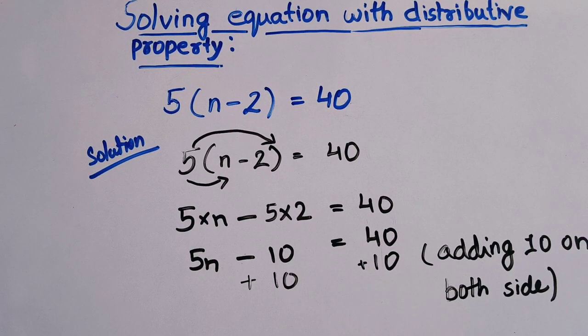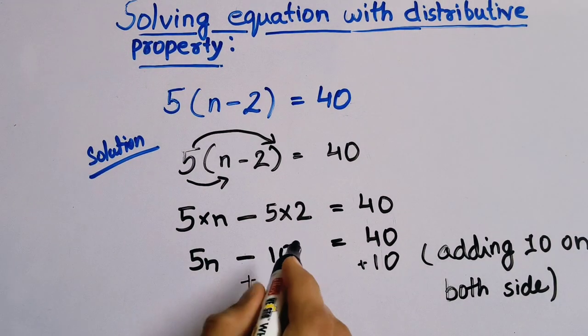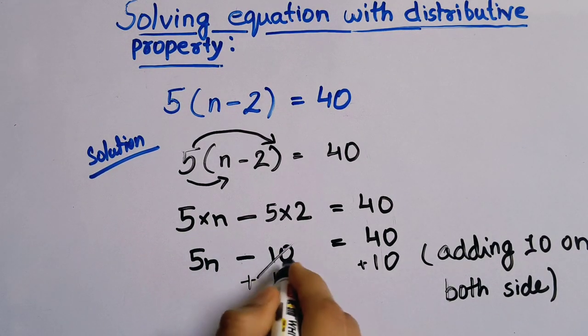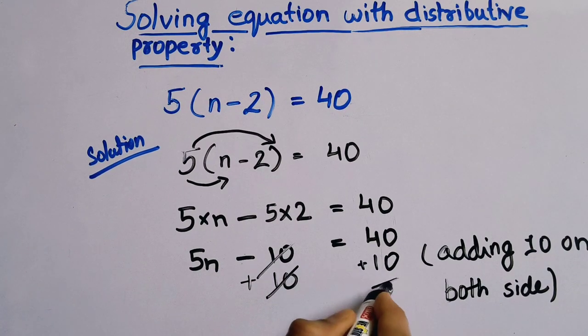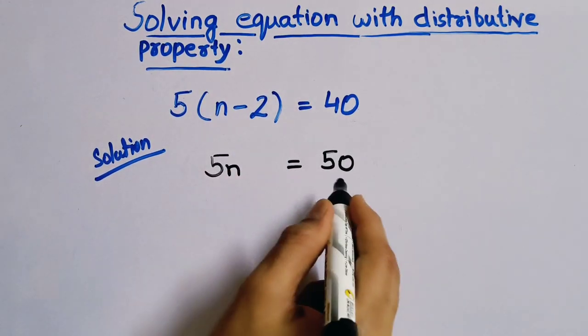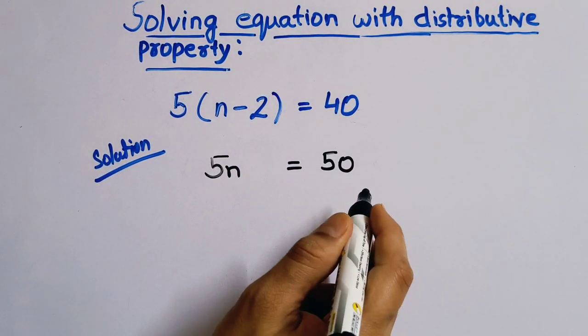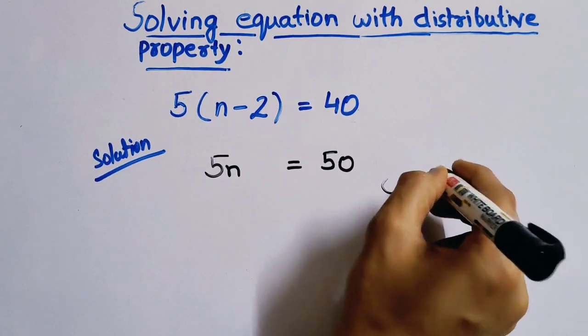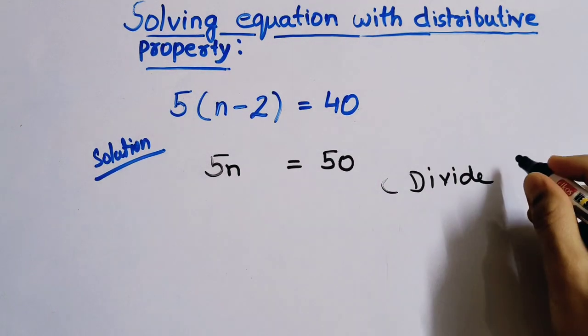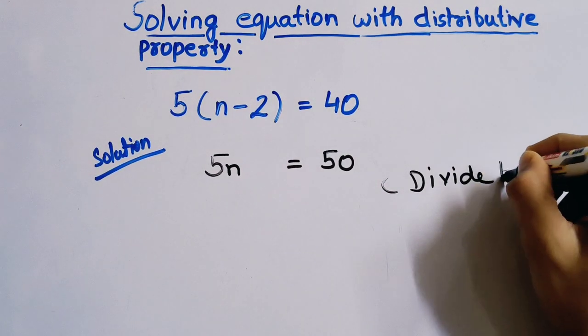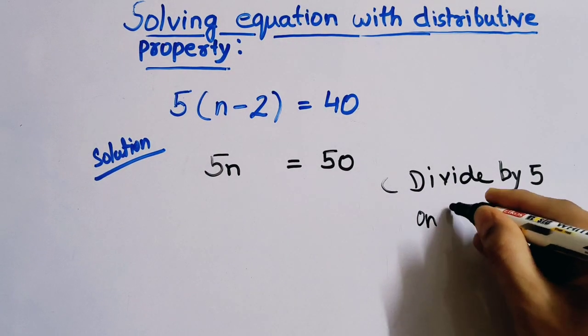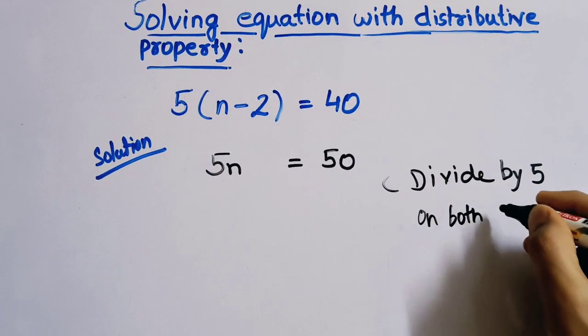So this will be minus 10 plus 10, we have 0, and here we have 50. We have 5n equals to 50. Now we will divide by 5 on both sides.